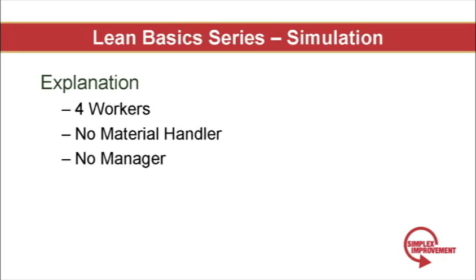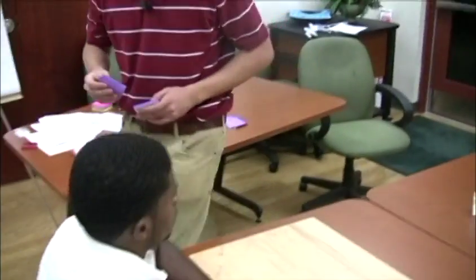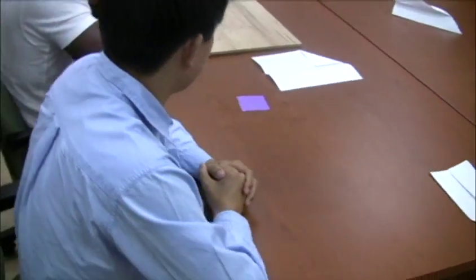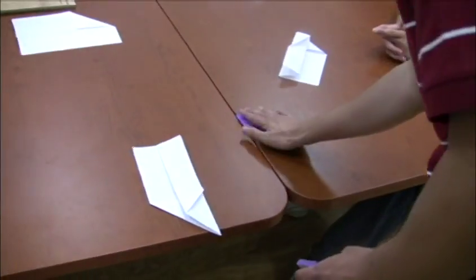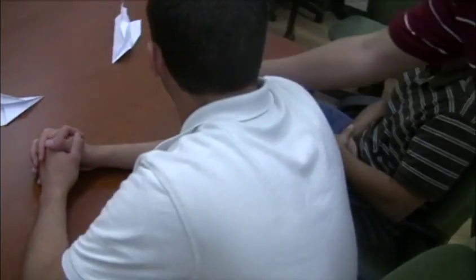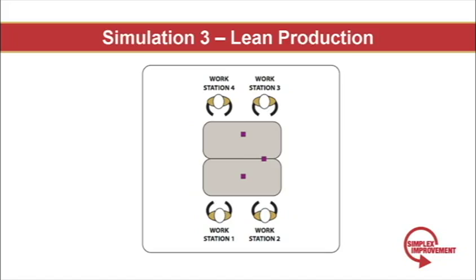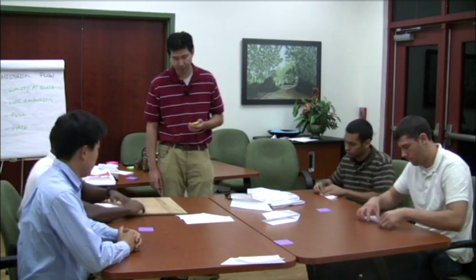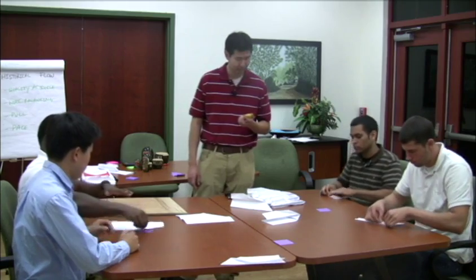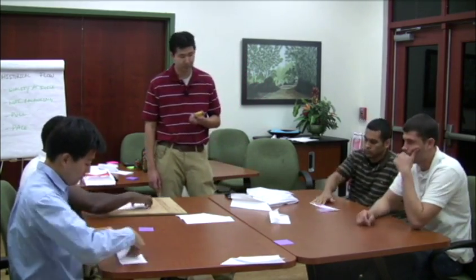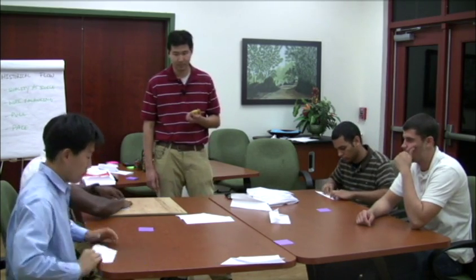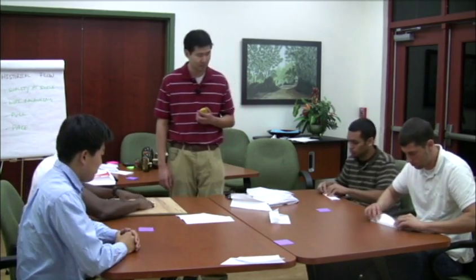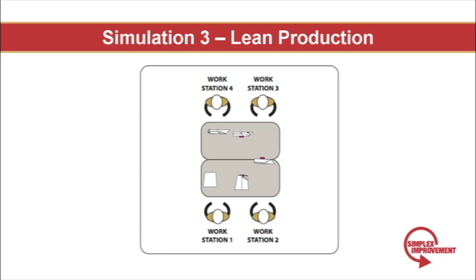For run three, the team decided not to use a material handler and manager because they were adding no value to the final product. The production line was reconfigured so everyone is sitting very close to one another, eliminating the need for the material handler. There were also post-it notes placed between each workstation to prevent overproduction — remember during the last run there were a staggering 57 pieces of work in process. The simple production rule agreed to was to only produce when the post-it note to their immediate right was not covered by a plane in work in process. Only when the post-it note was exposed by the next operator taking that piece could the previous worker begin working. This is called pull production, in contrast to the push production from the last run. This simple control eliminates the need for a manager, as the pace and amount of production is totally dictated by how often the customer pulls a plane. The worst case scenario is three pieces of work in process at any given time.